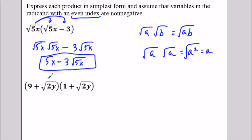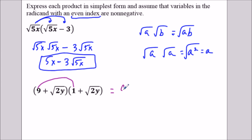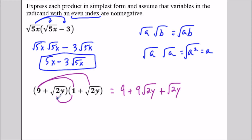For the second question, we have two binomials. This is going to be a little bit more involved when we multiply, but we're just going to use the distributive property. We've got 9 times 1, and then 9 times square root of 2y — so we've got 9 plus 9 square root of 2y. And then next we've got square root of 2y times 1, which is square root of 2y. And then last, square root of 2y times square root of 2y.